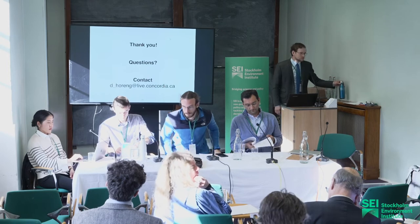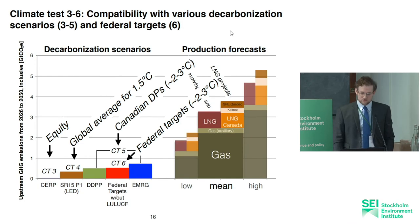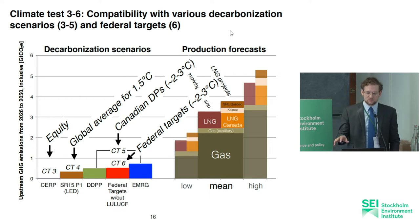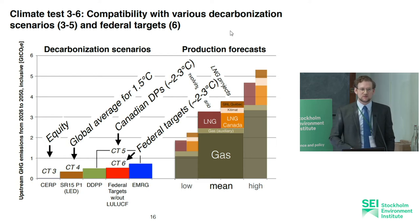A question was raised about the supply versus demand side distinction, which makes a big difference in Canada where extraction emissions are a tiny fraction of the total carbon footprint. The presenter clarified: the Y-axis shows upstream GHG emissions and the comparison is upstream to upstream. If you wanted to compare full life cycle emissions with downstream emissions, you could, but the analysis looks at constraints of domestic emissions — comparing like to like.